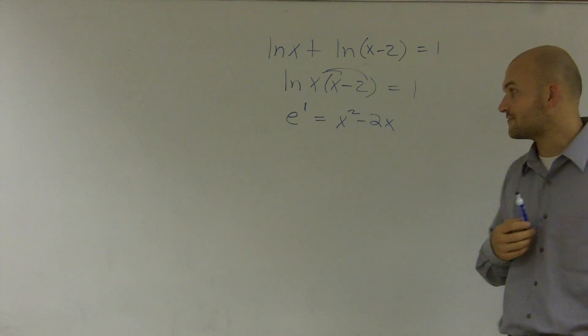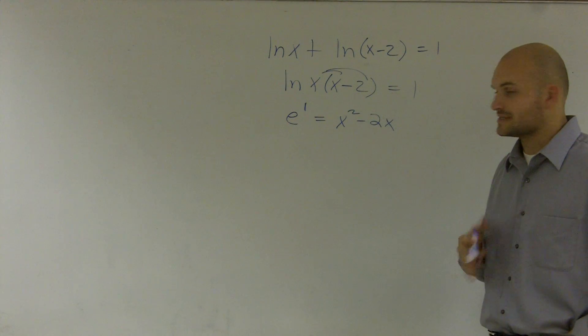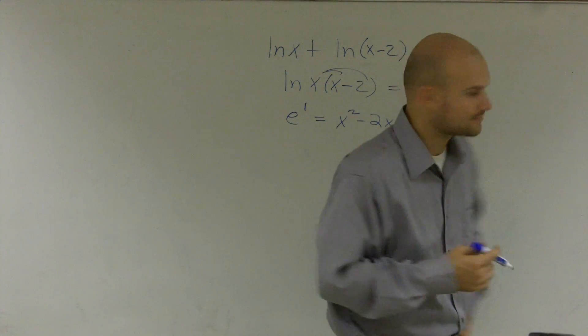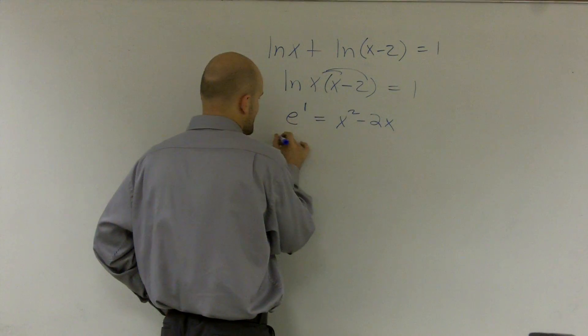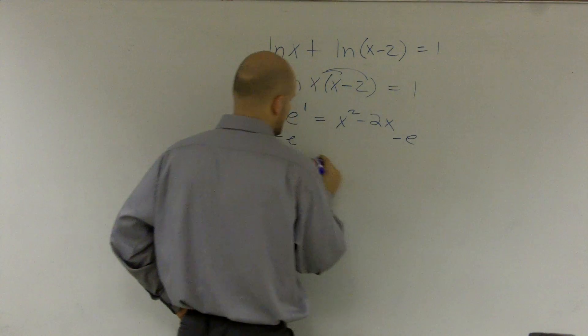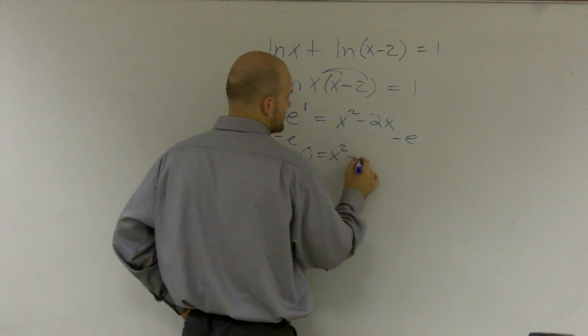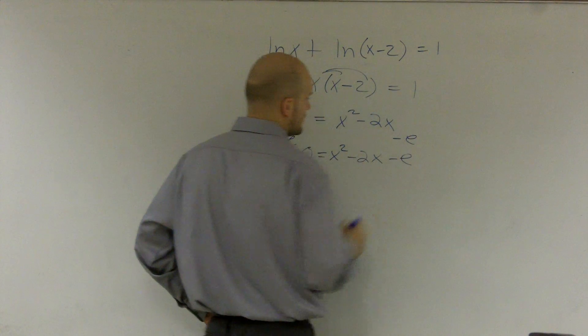So for this example, I'll use the quadratic formula. So the first thing I need to do is I need to put it in quadratic form. So let's subtract e, and I get 0 equals x squared minus 2x minus e.